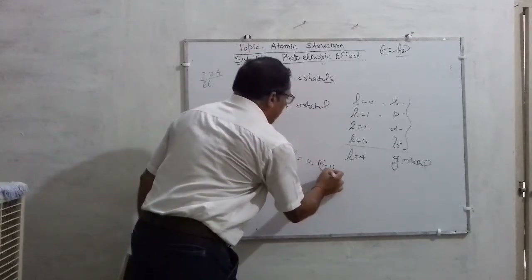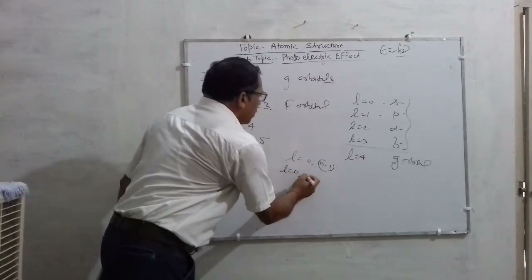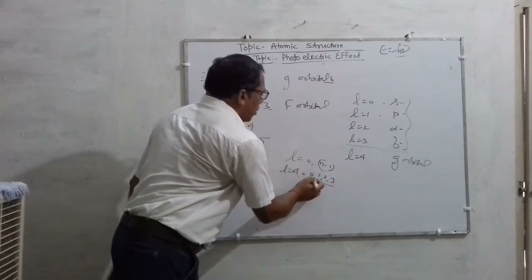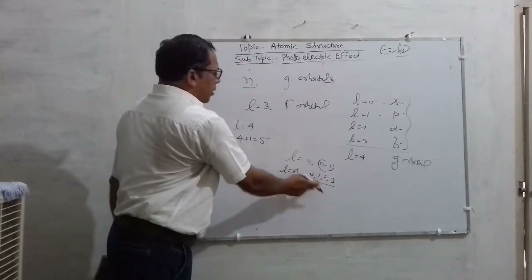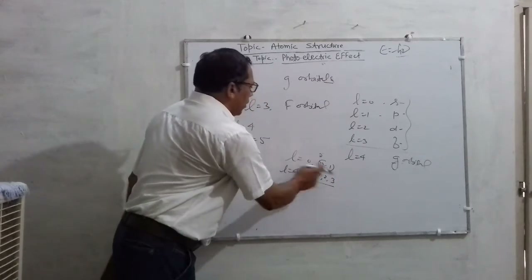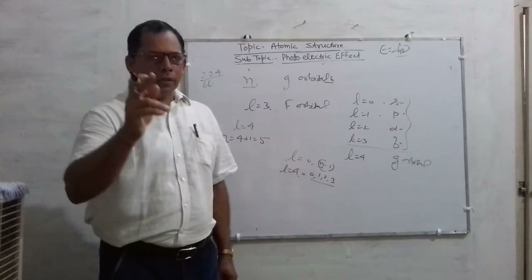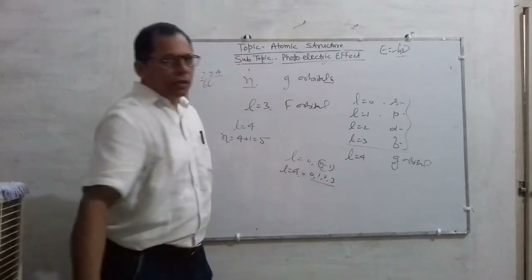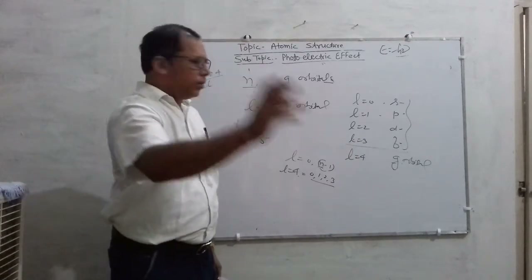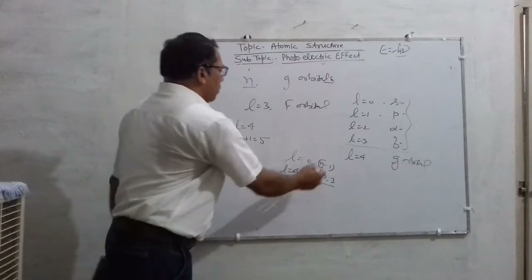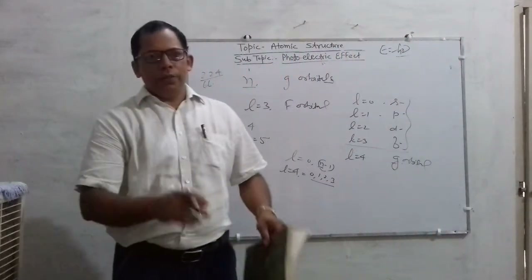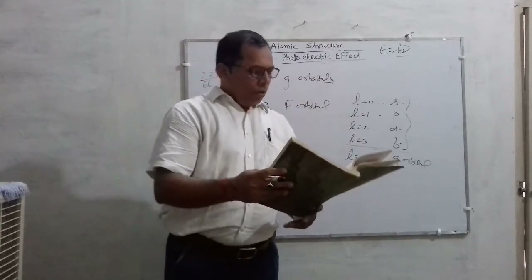The value of L varies from 0 to N minus 1. If the value of L is 4, then if you put N equal to 5 in the formula, L goes from 0 to N minus 1 which equals 4. So for N equal to 5, the value of L will be 4, and G orbital will exist. This is the clear answer: the lowest value of N that allows G orbital to exist is N equal to 5.